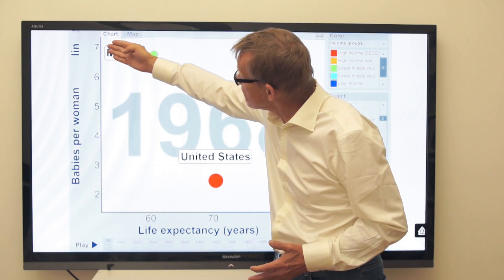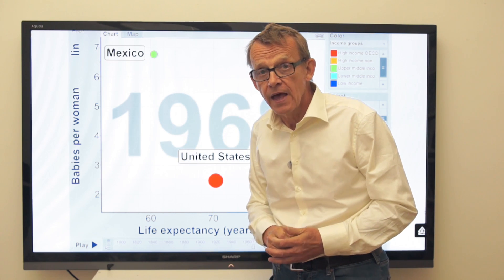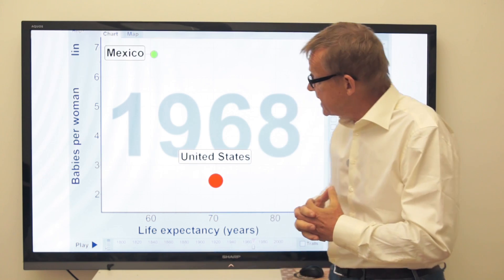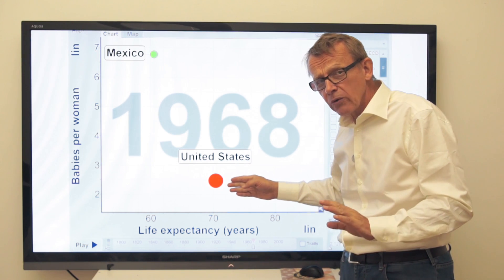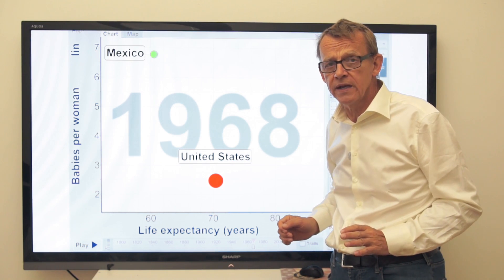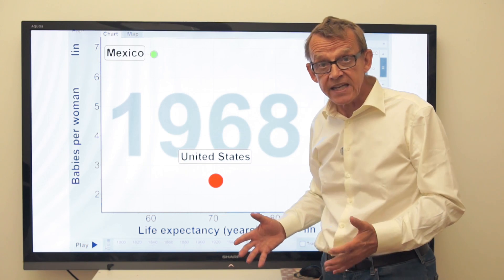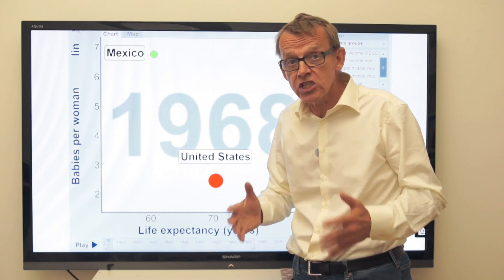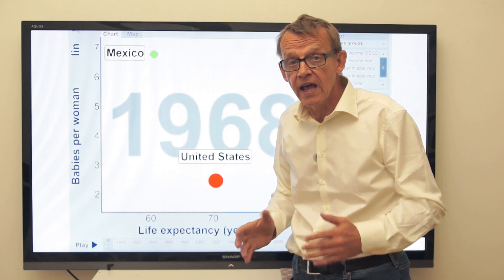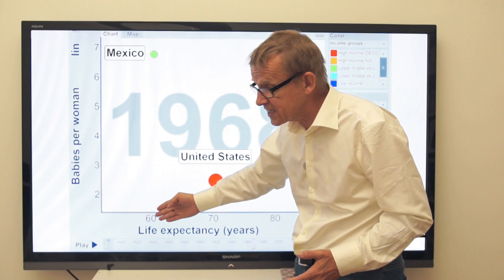All the way from 7 children down to 4, 3, and 2 child families. And in 1968, the United States had about 2 to 3 children per woman and an average length of life of 70. But Mexico was all the way up here — they had almost 7 children per woman and 10 years shorter lifespan, an average of 60 years.